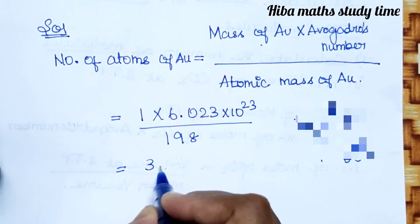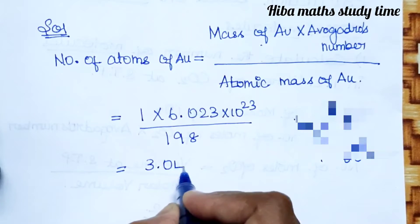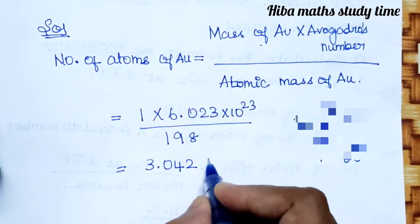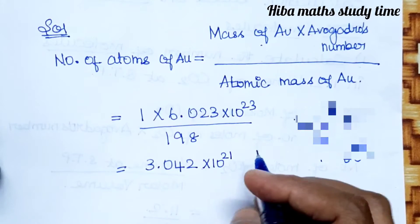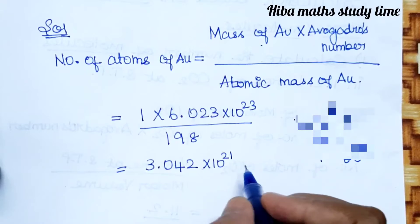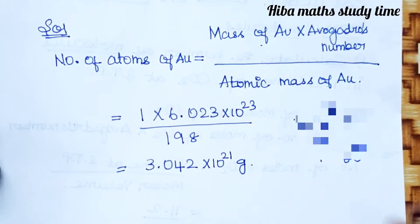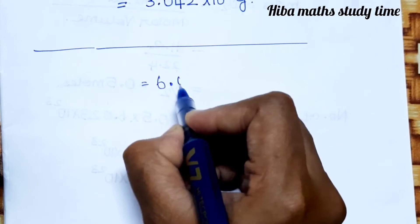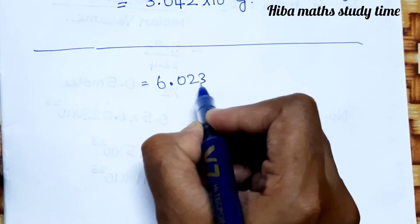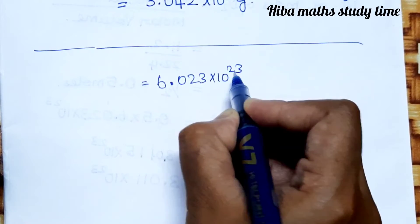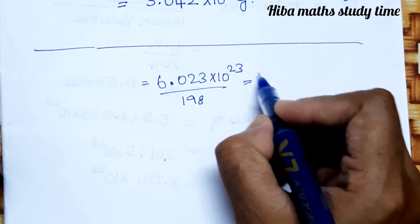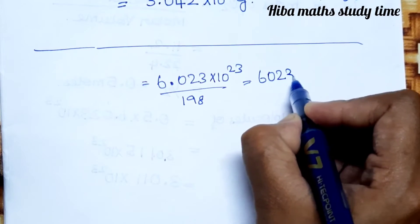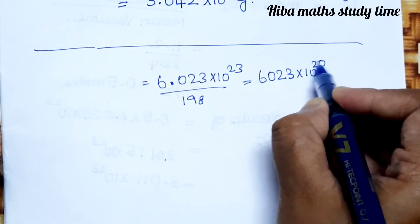The answer is 3.042 into 10 power 21. Let's practice the calculation. We compute 6.023 into 10 power 23 divided by 198.